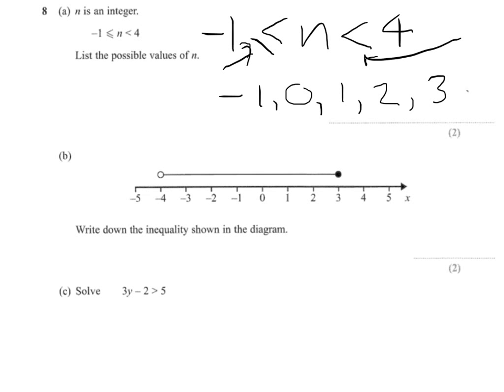Right, writing down the inequality shown in the diagram. So we put x is greater than numbers on the left, less than numbers on the right. We can be, as the circle is colored in, that means we can be equal to 3.